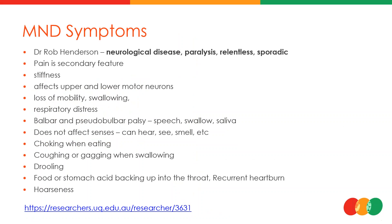The symptoms associated with MND are mainly neurological. You might see paralysis — it's a relentless and sporadic disease, ebbing and flowing in severity. Pain is generally a secondary feature, but stiffness is common. Signals to the cortex are altered, disrupting communication, and all nerve-associated mechanisms are affected, leading to choking when eating, coughing, gagging, or drooling, as well as respiratory distress, hoarseness, and other symptoms associated with upper and lower motor neuron involvement.